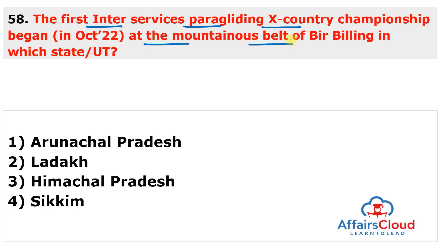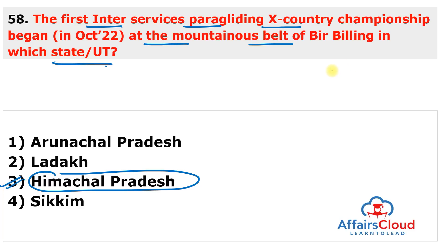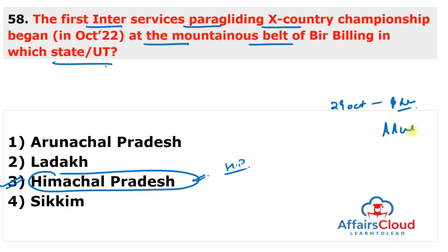Next question: the first Inter-Services Paragliding X-Country Championship began at the mountainous belt of Bir-Billing in which state or union territory? The answer is Himachal Pradesh. This first-ever inter-services paragliding championship began with a colorful opening ceremony at the mountainous belt of Bir-Billing in Himachal Pradesh. The championship is being conducted from 29th October to 1st November under the Army Adventure Wing (AAW).